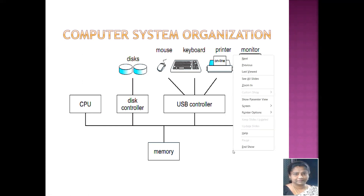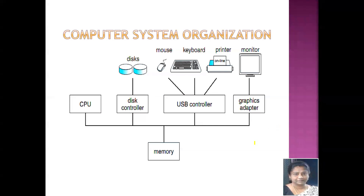If you look at this diagram very carefully, you will be able to understand that this is the structure of a modern general purpose computer system, which can consist of one or more CPUs and a number of device controllers such as disk controller, USB controller, and graphics adapter. All of them are connected through a common bus through which they can access the shared memory. This is the general structure of any general purpose computer system.